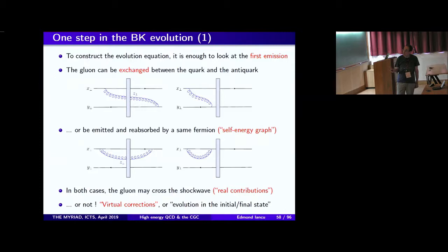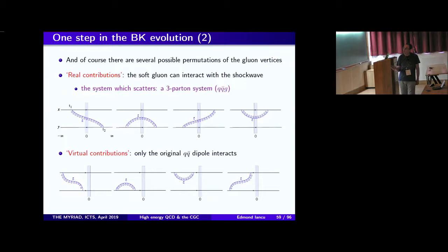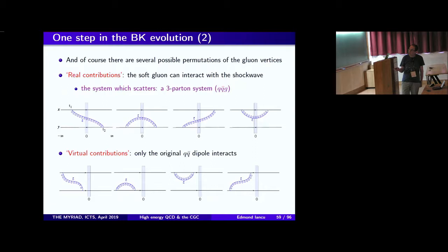Altogether there are eight topologies: four real graphs (gluon crosses shockwave) and four virtual graphs (gluon does not cross shockwave) — or twelve if you count both initial-state and final-state virtual corrections. Let me compute some of them in detail, focusing on the exchange graph where the gluon is emitted by one quark and absorbed by the other, with a real and a virtual piece. The prefactor here is delta-Y, the rapidity interval for the single gluon emission, working under the assumption that alpha_s delta-Y is much less than one — so we do only one step in the evolution.